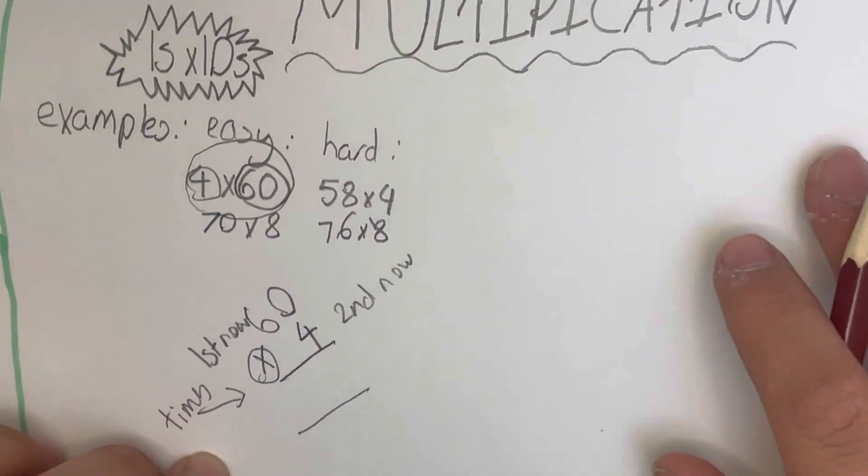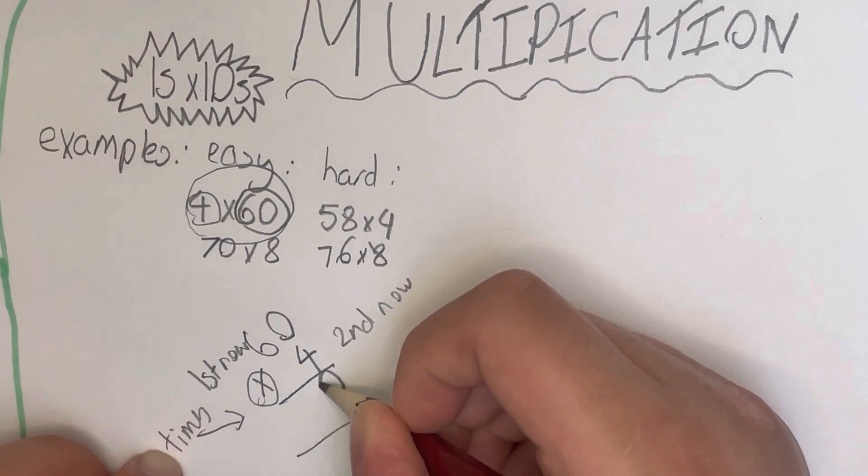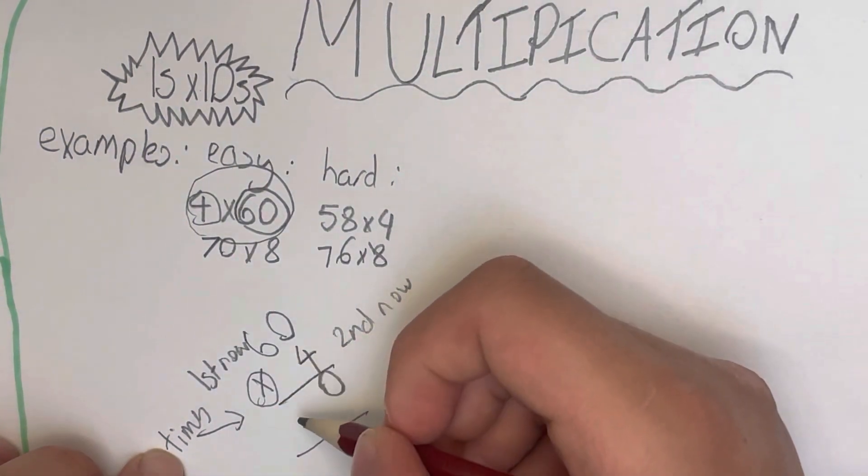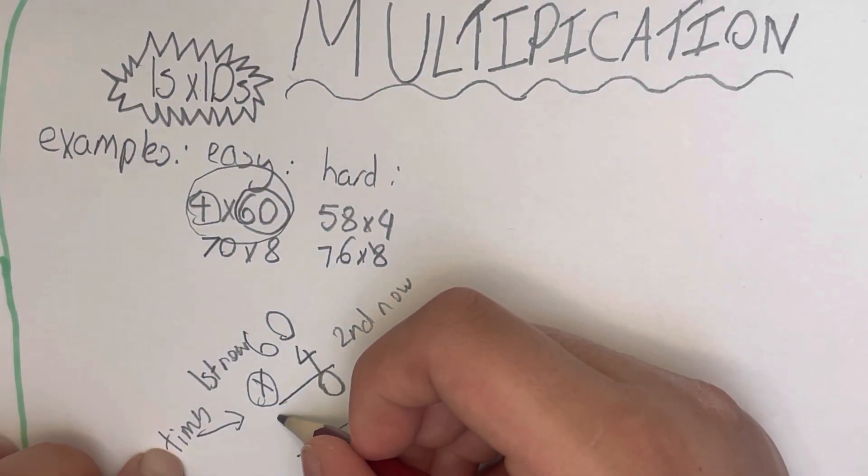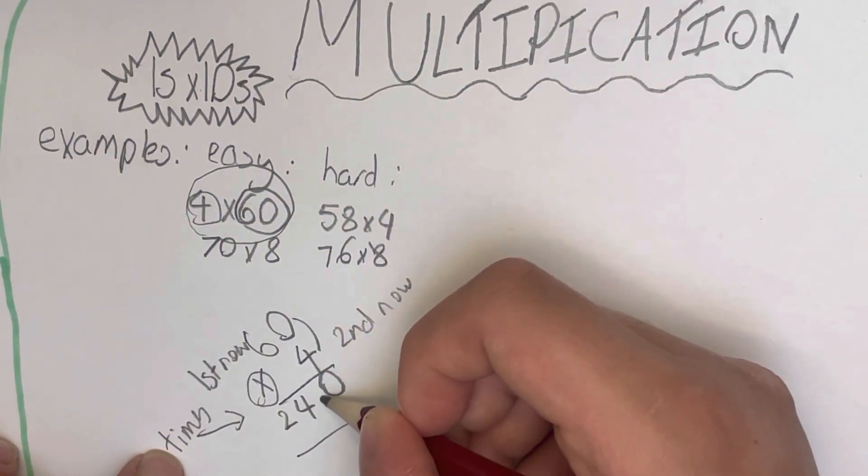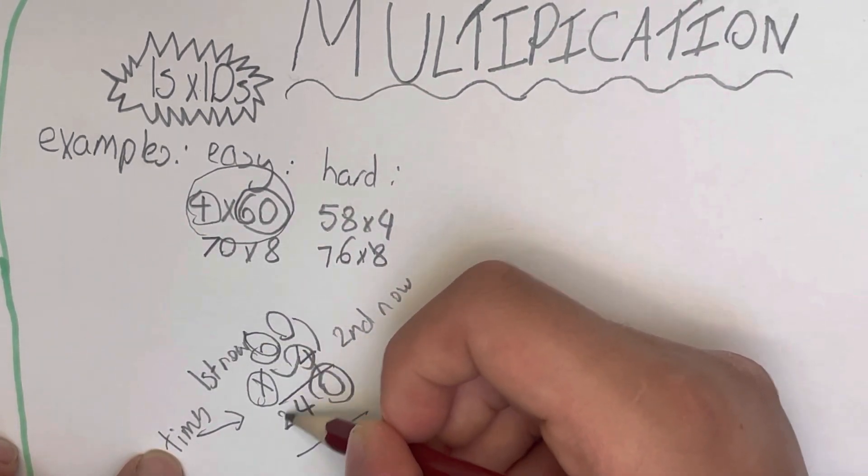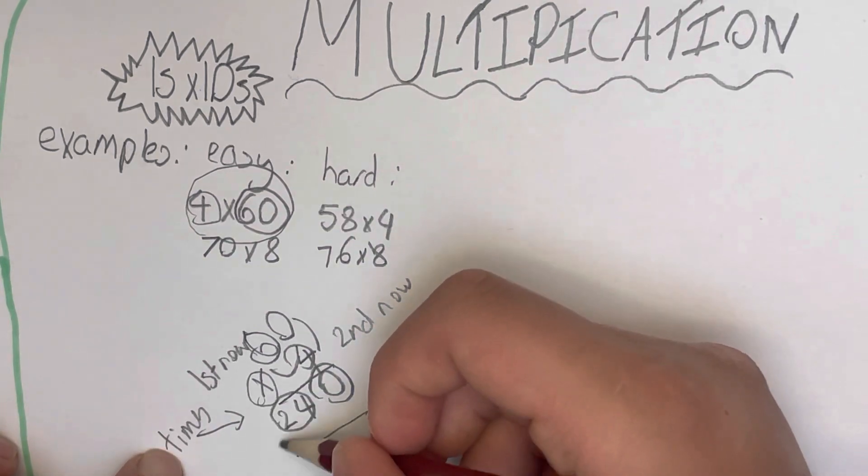So 0 times 4, as we know, is 0. 6 times 4, as we know, is 24. So 0 times 4 is 0, and then 6 times 4 makes 24. And that's how we get the answer: 240.